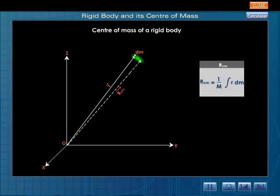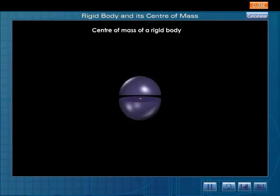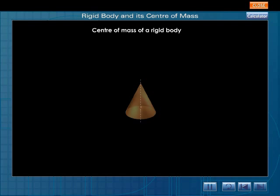Remember for a homogeneous body the center of mass will always lie on a point or a line or in the plane of symmetry. For example, for a sphere the center of mass is located at its center and for a cone it will lie on its axis.